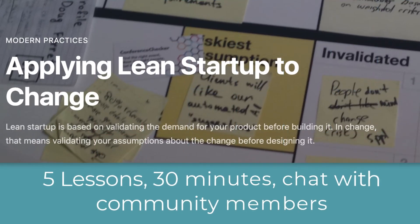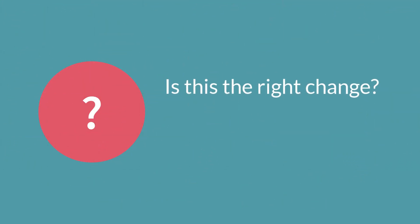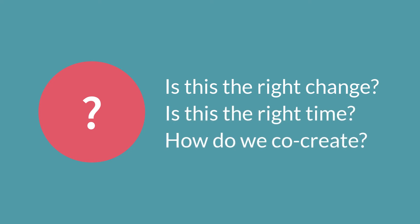Our micro course, Applying Lean Startup to Change, is designed to help you think this way about change. It'll answer questions such as: how do we know this is the right change? How do we know it's the right time? And how can we co-create the change with the people affected by the change?